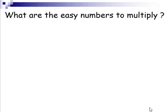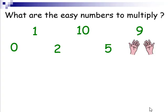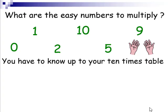What are the easy numbers to multiply? A lot of people would say 0, 1, 2, 5, and 10. Some people may not say 9. If you do not know the hand trick or finger trick for multiplying your 9 timetables, you should leave this video and watch the video in the description.